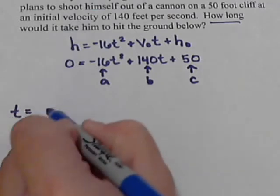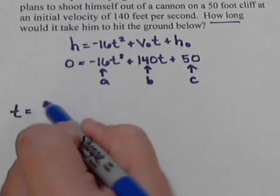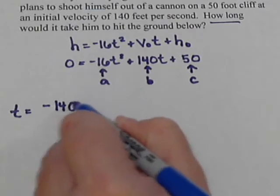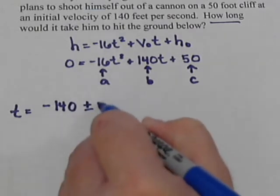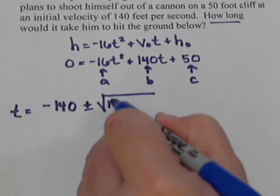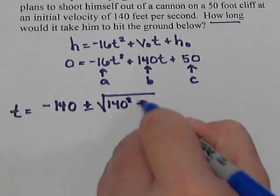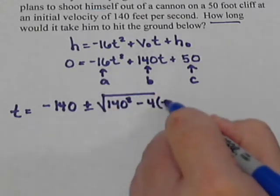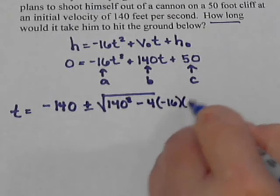We have t equals negative b, so negative 140, plus and minus b squared, so 140 squared, minus 4, times our a, which is negative 16, times our c, which is 50.